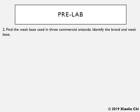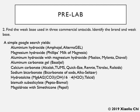Pre-lab Question 2: Find the weak base used in commercial antacids — identify the brand and the weak base. A simple Google search will show you a list of chemicals such as aluminum hydroxide, magnesium hydroxide, aluminum carbonate, calcium carbonate, and sodium bicarbonate.